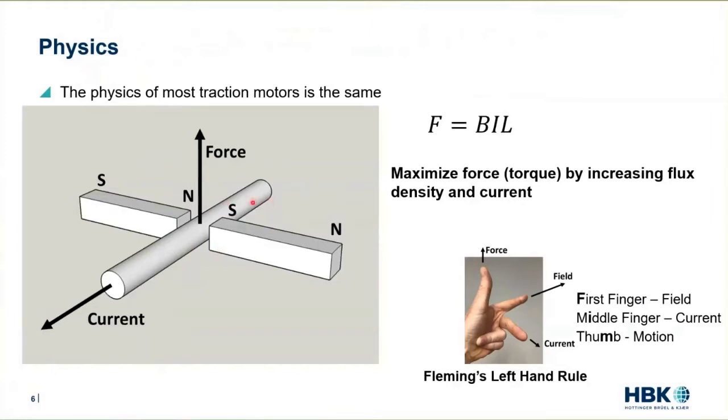The basic way that they work is you have a current carrying conductor in a magnetic field, and the result of that is the resulting force. You have force that's equal to B, which is the strength of the magnetic flux, times I, which is the current, and L is the length of this carrying conductor that's within the field.